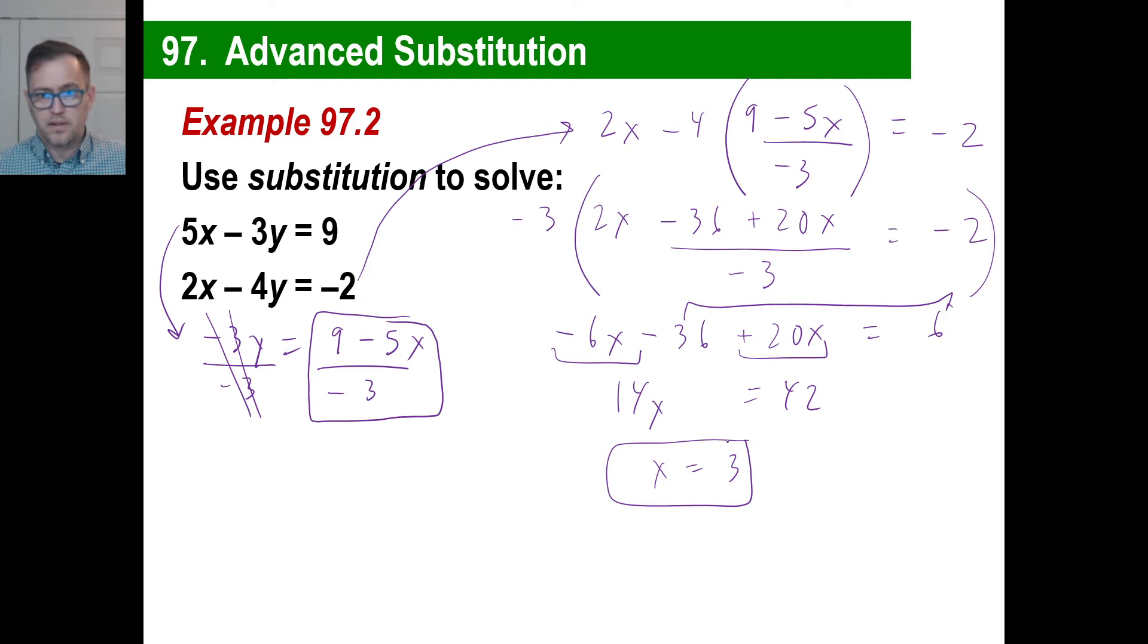If X is 3, we can go either one of these if we want. Let's just go back to the top one here. 5 times X, I'm going to yoink this down here. That's 15 minus 3Y is equal to 9. So negative 3Y is equal to 9 minus 15. Well, 9 minus 15 is negative 6. So Y is equal to 2. There we go. Man, I love elimination a lot more than that, but it's a good brain exercise for you. Alright.